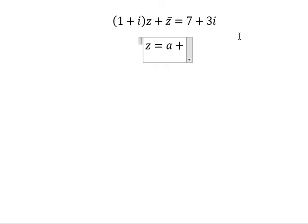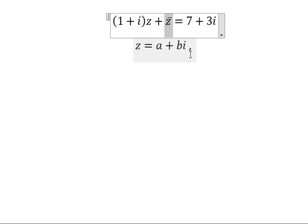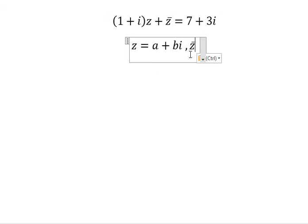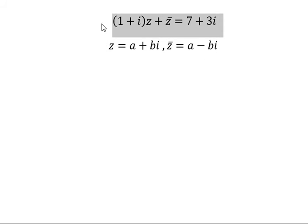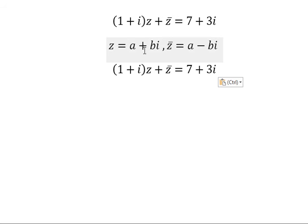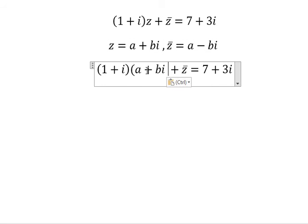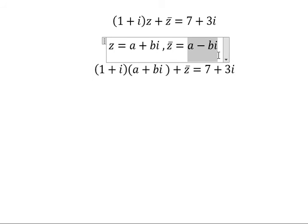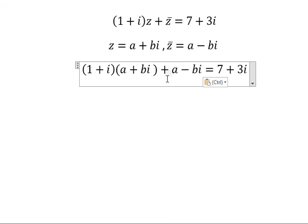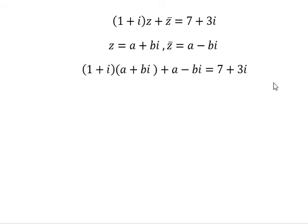This is z equals a plus bi. For z bar, we will have z bar equals a minus bi. So I will put this one in here and this one in here.